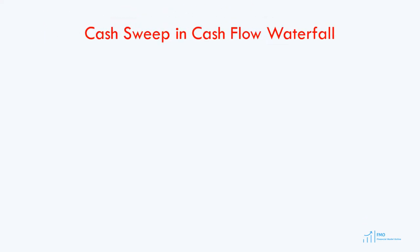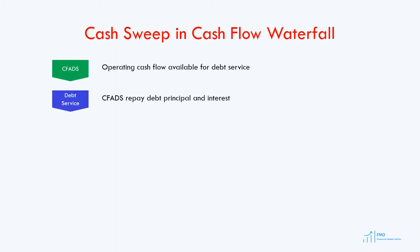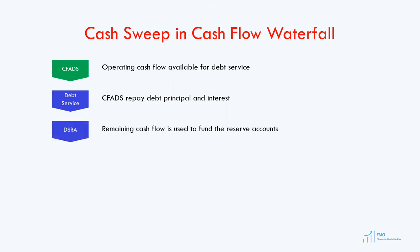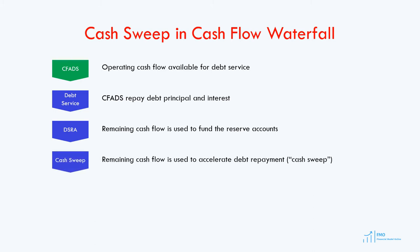Let's return to the cash flow waterfall to understand the position of the cash sweep in it. We start with the cash flow available for debt service, then we pay the debt service. After the debt service, we fund the debt service reserve account or any other required reserve accounts. The remaining cash flow is used to accelerate debt repayments as a cash sweep. The cash flow that remains after the cash sweep can then be distributed to shareholders in the form of dividends.